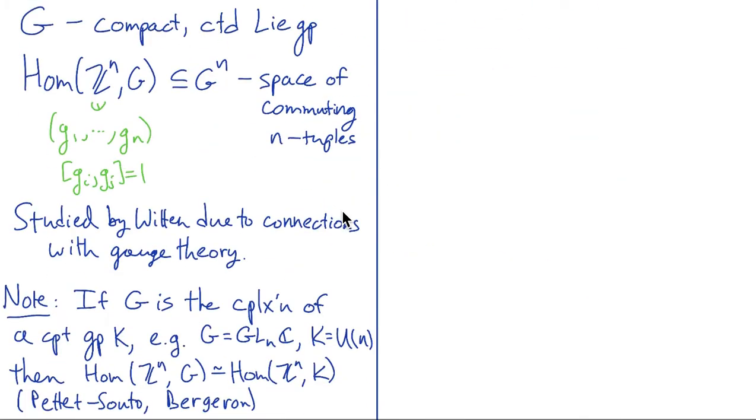So I just want to start by setting the stage here. The objects that we're interested in are spaces of commuting elements in Lie group. We'll start with a compact Lie group G and we're going to look at a space Hom from a free abelian group into G. So that just consists of all n-tuples of elements in the group which pairwise commute.